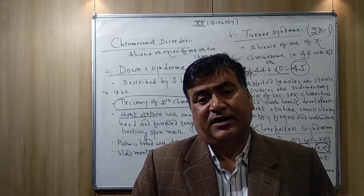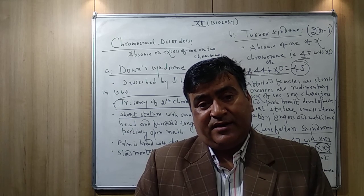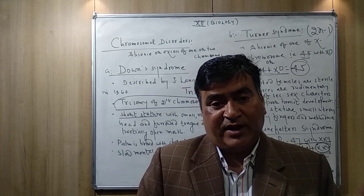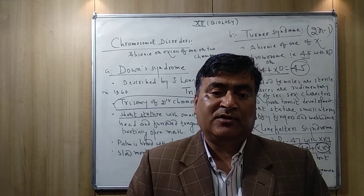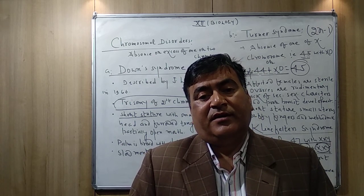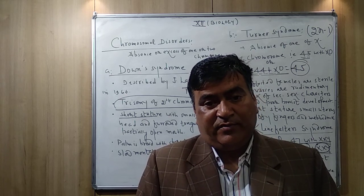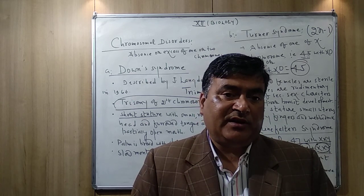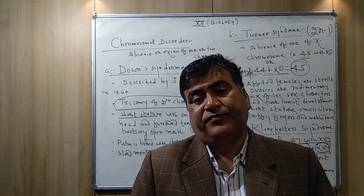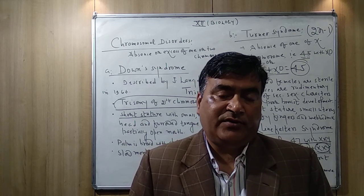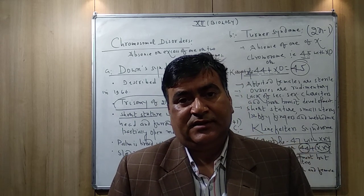Both the trisomic condition (2n+1) and the monosomic condition (2n−1) are types of aneuploidy. Review your book to differentiate between aneuploidy, polyploidy, monosomy, and trisomy. That is all for today; tomorrow the next topic will be covered.